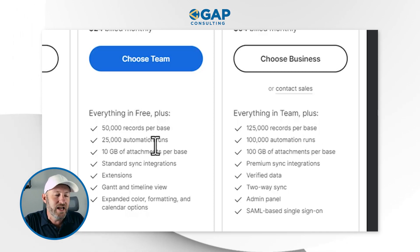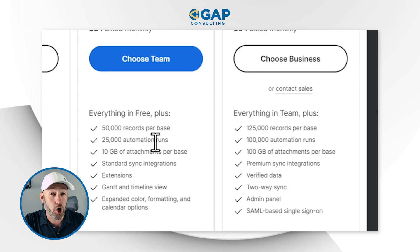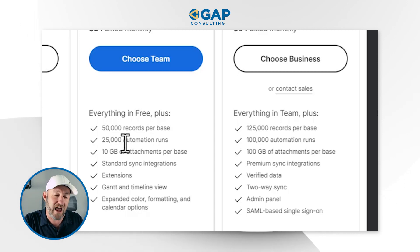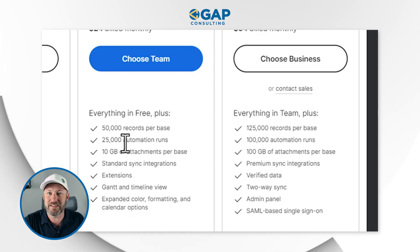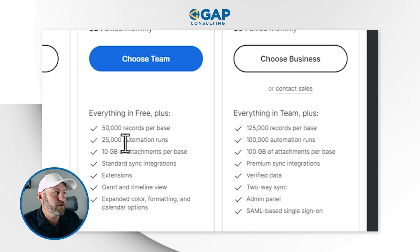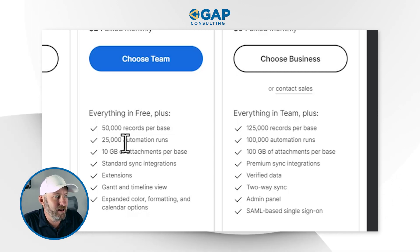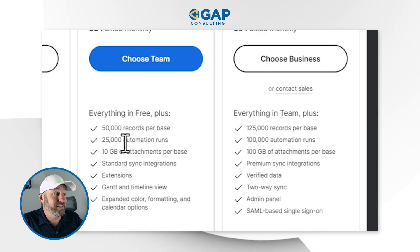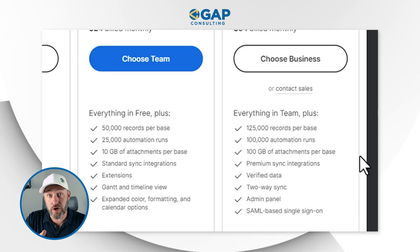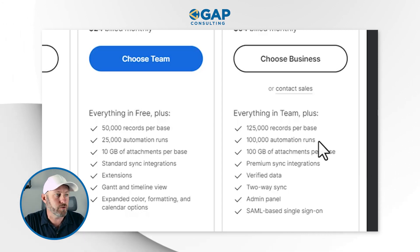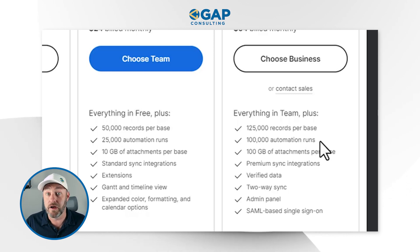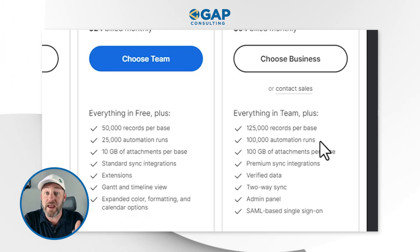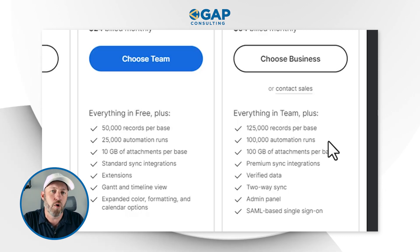Now let's look at automations. This is a bit of a downgrade for team, because previously the pro plan at $20 a month gave us 50,000 automation runs, but now that's been cut in half to 25,000. Still, that's a lot of automation — if I'm on a team plan getting 25,000 automation runs every month, that's an awful lot of automating, and if I'm exceeding that, I can probably afford to upgrade. On the business tier though, we get 100,000 automation runs, which is awesome.